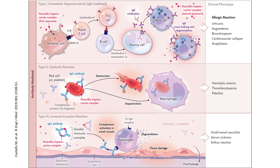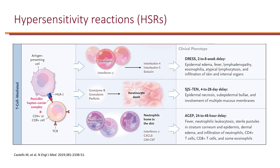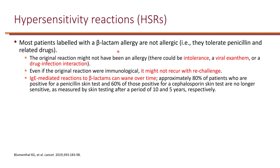Types 1, 2, and 3 are all antibody-mediated hypersensitivity reactions — type 1 by IgE specifically — while type 4 is specifically T-cell mediated. Now let's focus on beta-lactam allergy specifically.